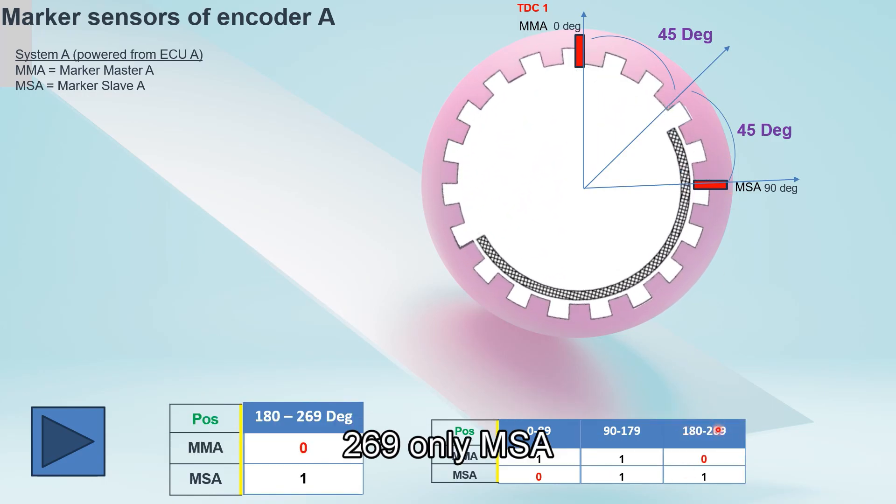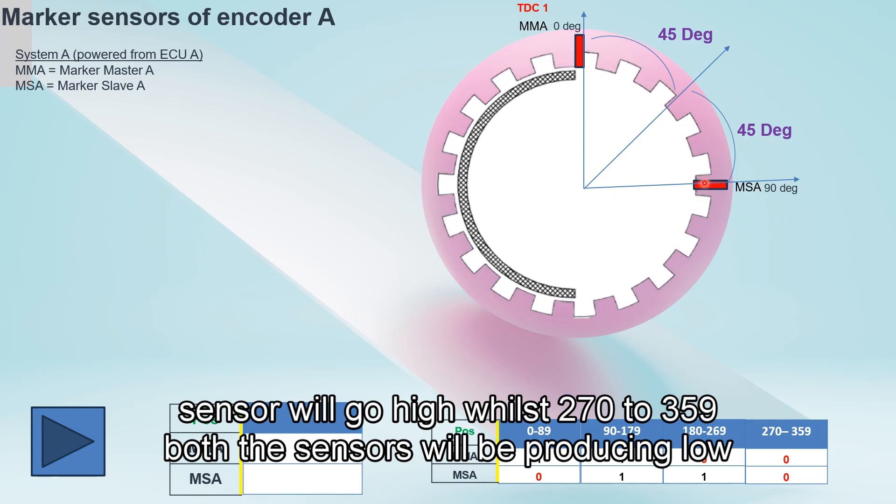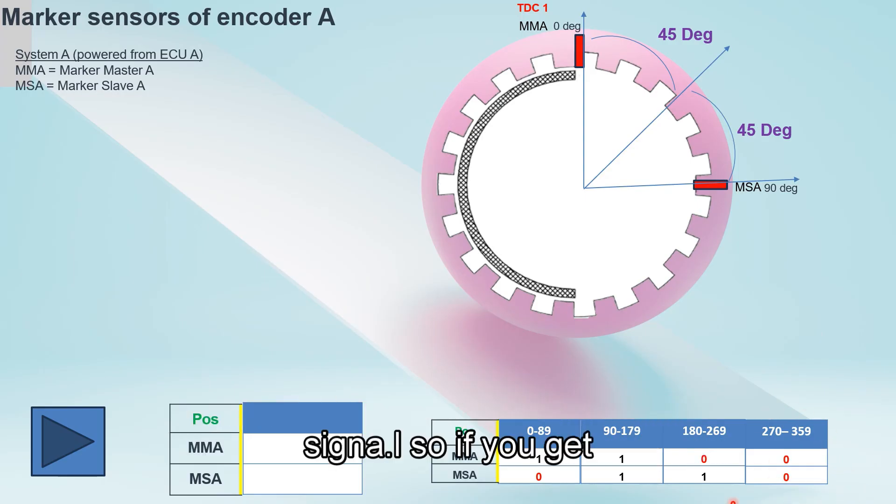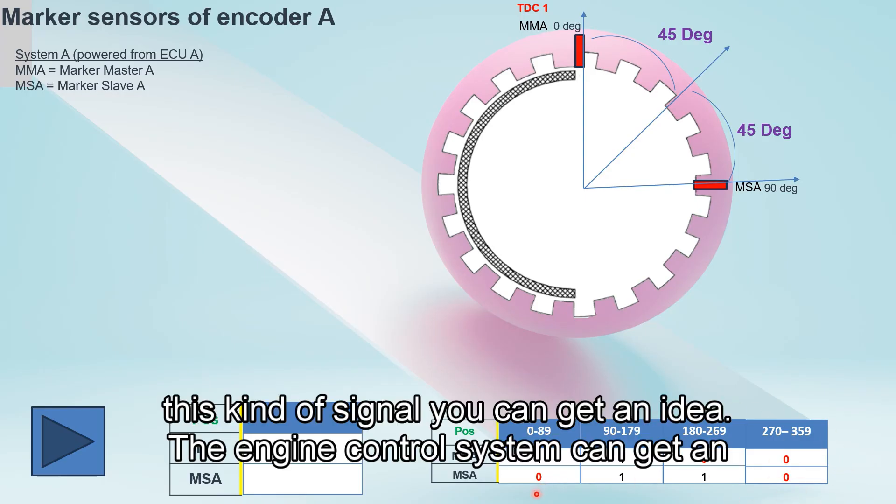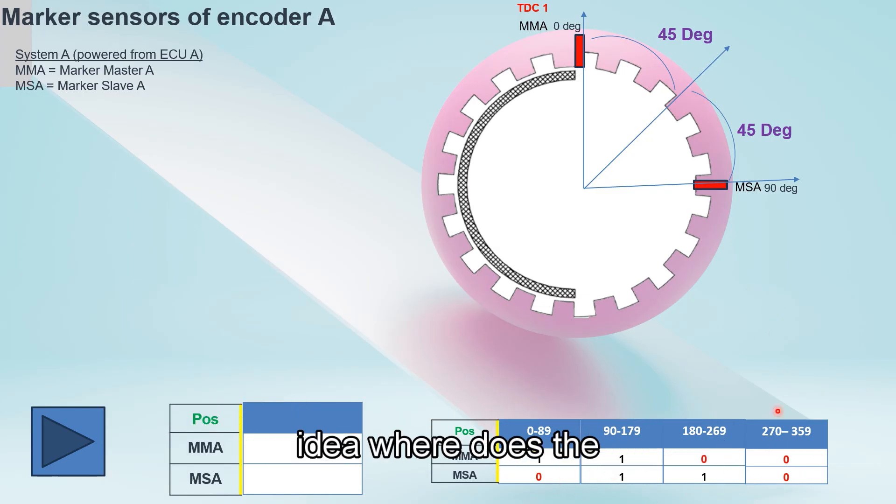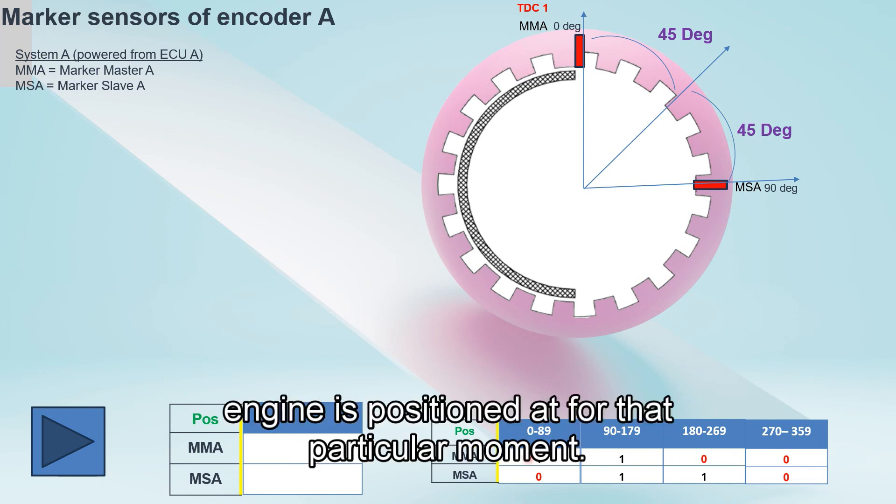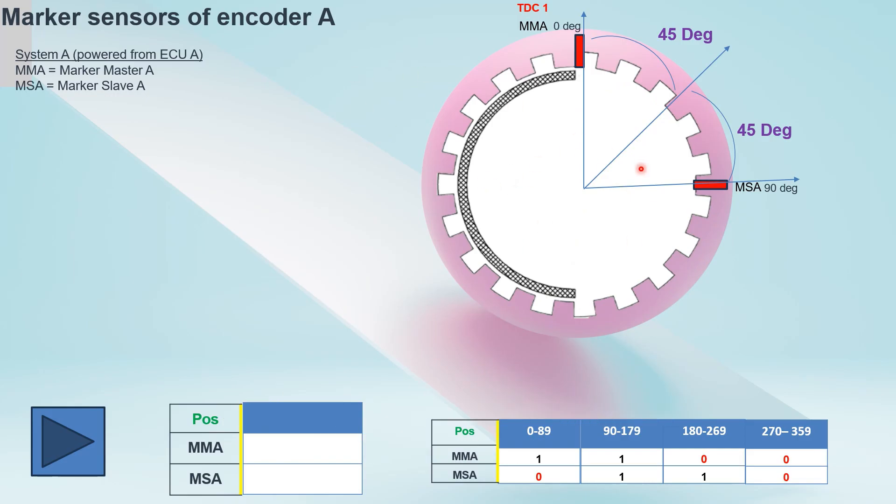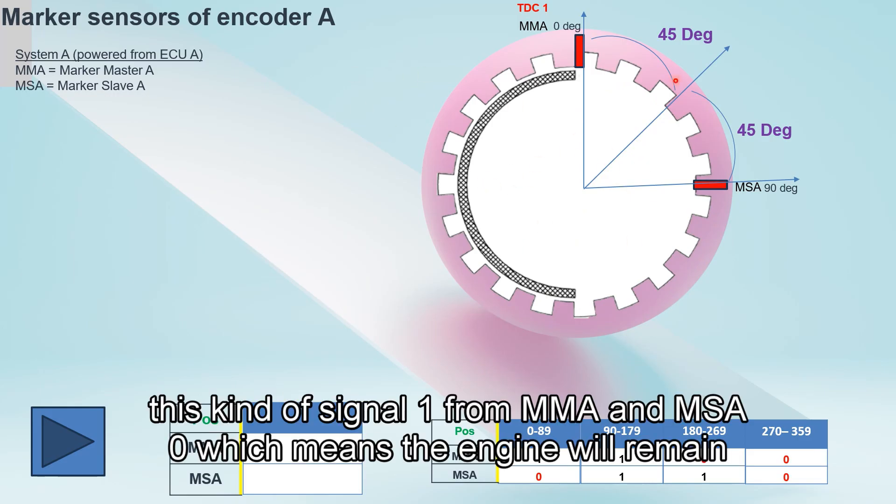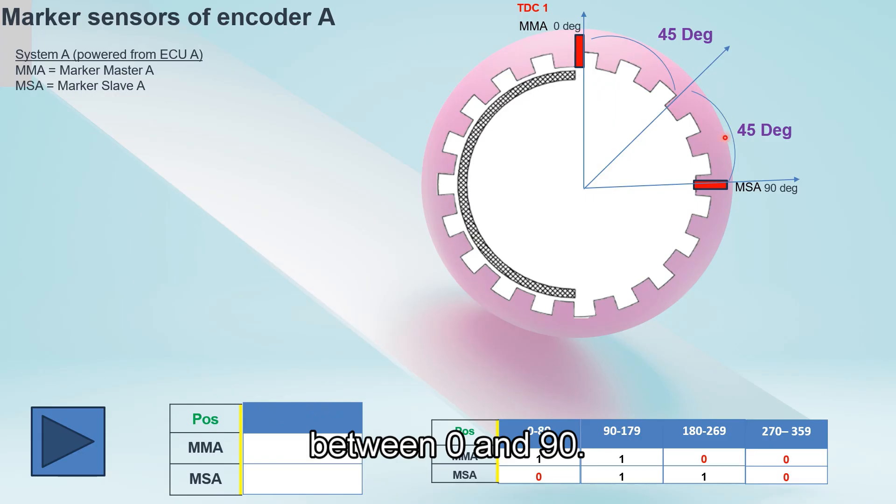From 180 to 269 degrees, only the MSA sensor will go high, whilst 270 to 359 degrees, both sensors will be producing low signal. If you get this kind of signal, the engine control system can get an idea where the engine is positioned at that particular moment. For example, if we get signal one-zero from MMA and MSA zero, which means the engine will remain between 0 and 90 degrees.